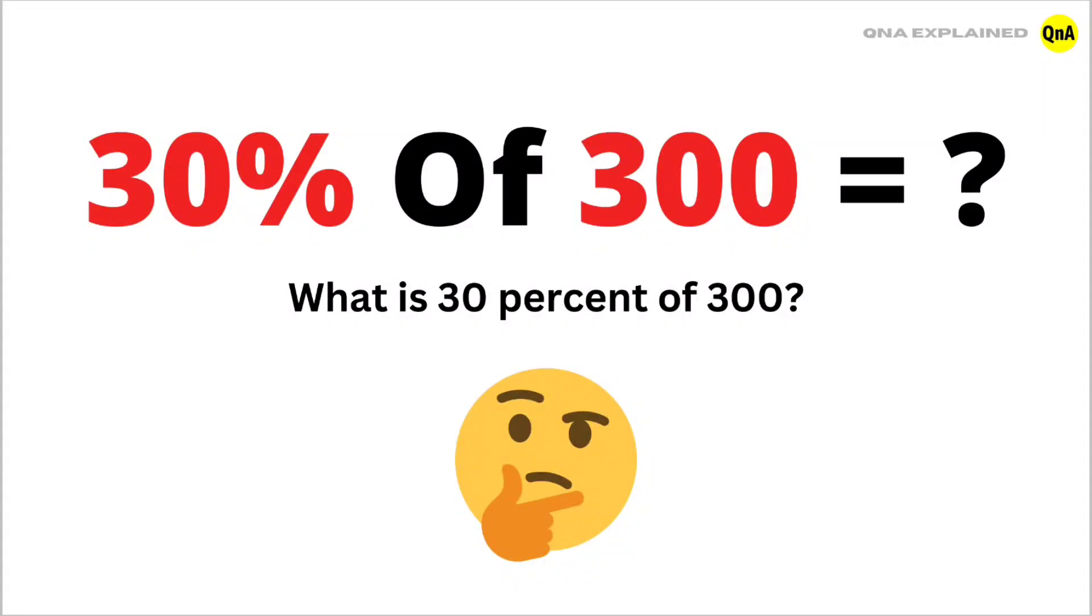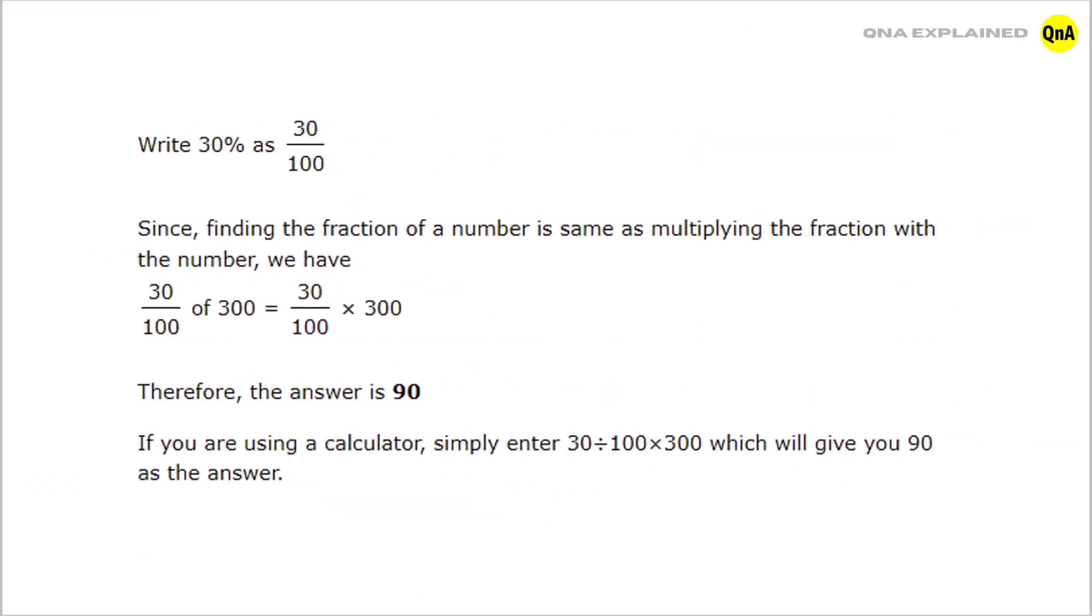What is 30% of 300? Write 30% as 30/100. Since finding the fraction of a number is the same as multiplying the fraction with the number, we have 30/100 of 300, which is equal to 30/100 × 300.